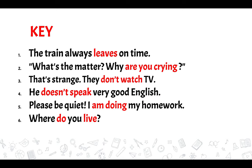Number five: 'I'm doing my homework' — it's happening right now, so present continuous. Number six: 'Where do you live?' — as a habit or place of residence, we use present simple. However, 'Where are you living now?' would also be acceptable, implying a temporary arrangement — for example, they're living in North York but may move to another city next month.